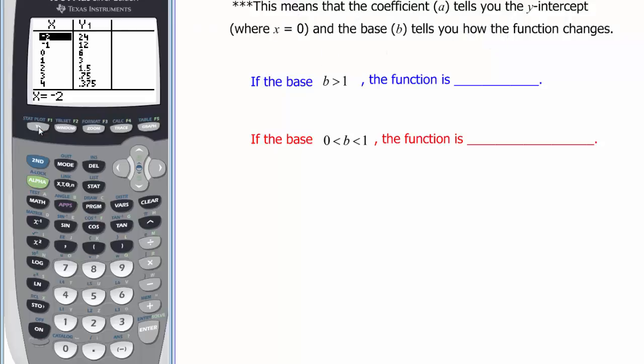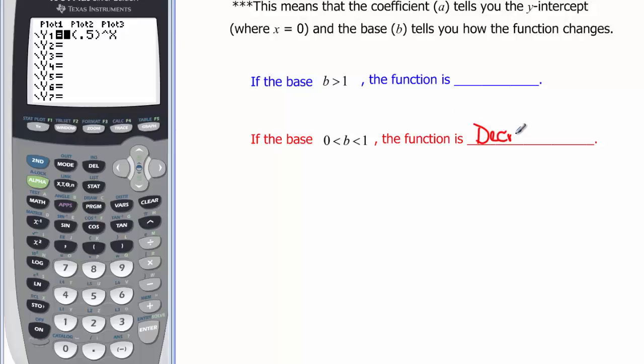And b tells us how the function changes. This particular one, b was one-half, so that would be this case down here in red where b is greater than zero but less than one, our function was decreasing. And in the other case when we had three times two, remember we were multiplying by two and the numbers kept getting bigger. So it increases when b is greater than one.